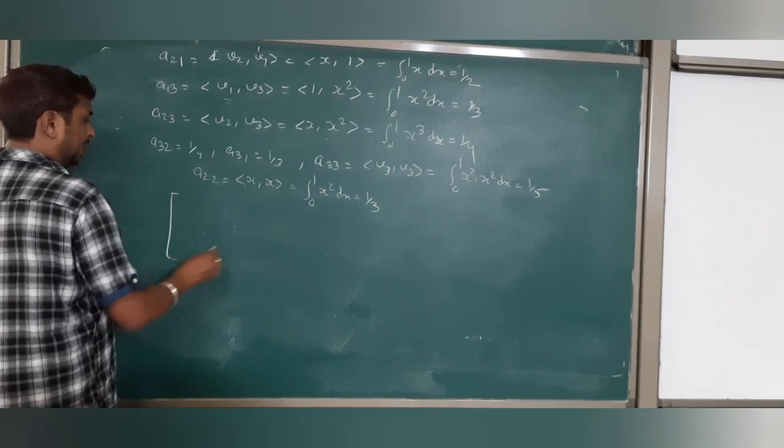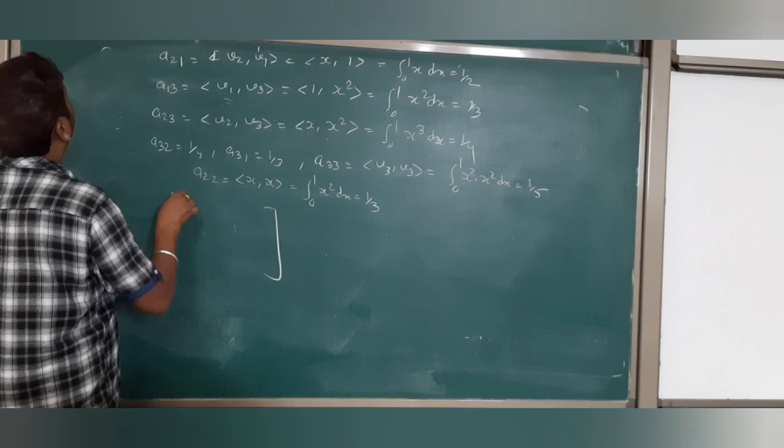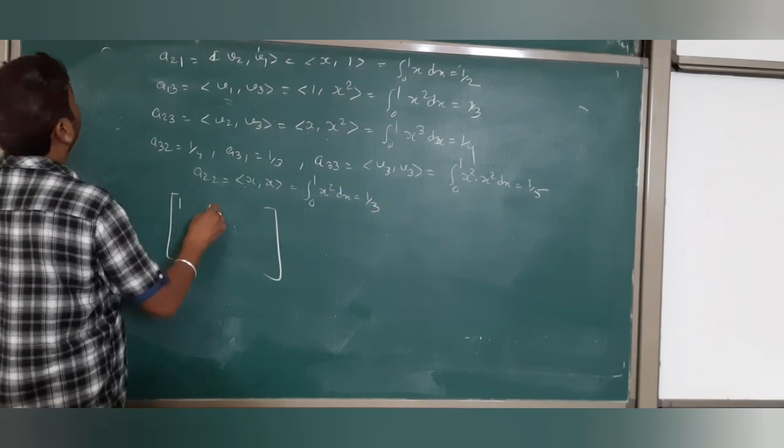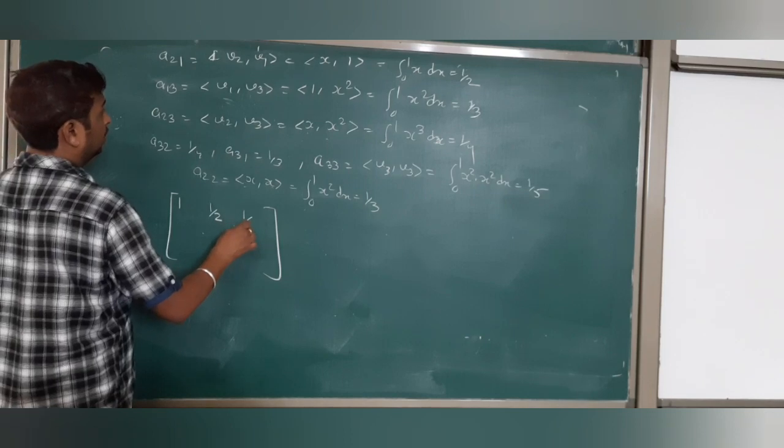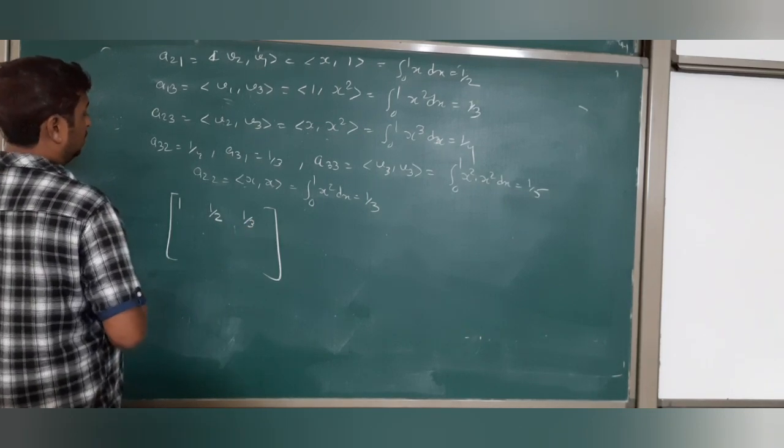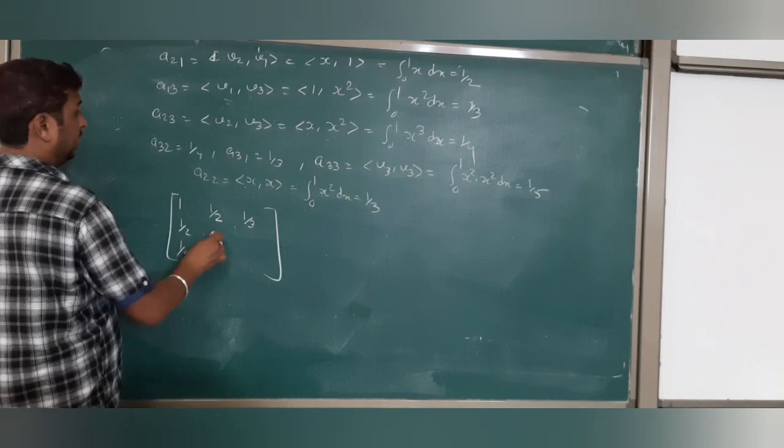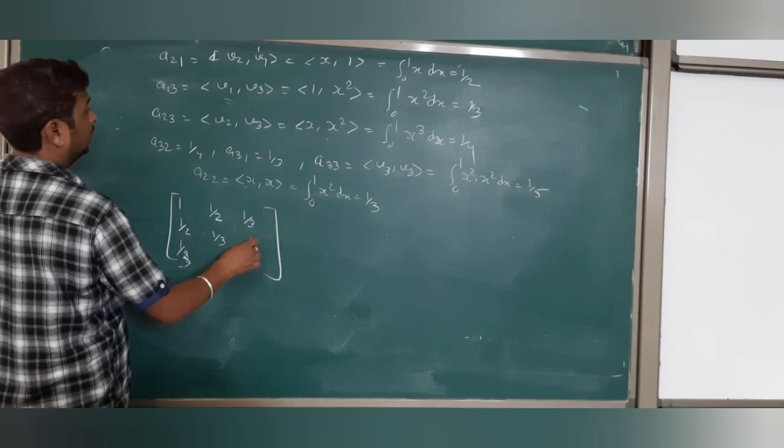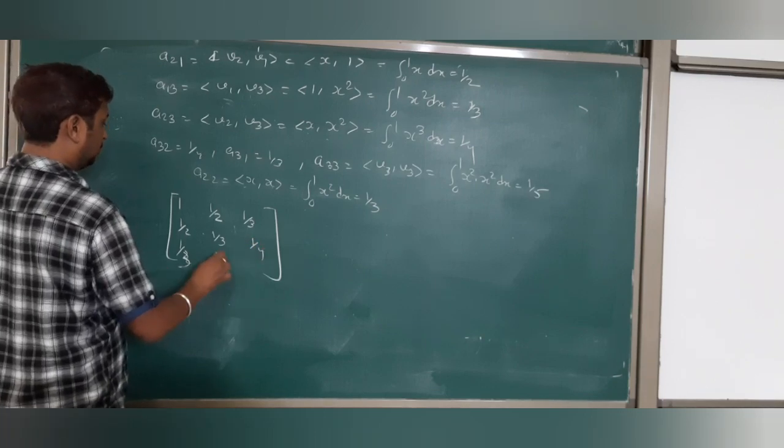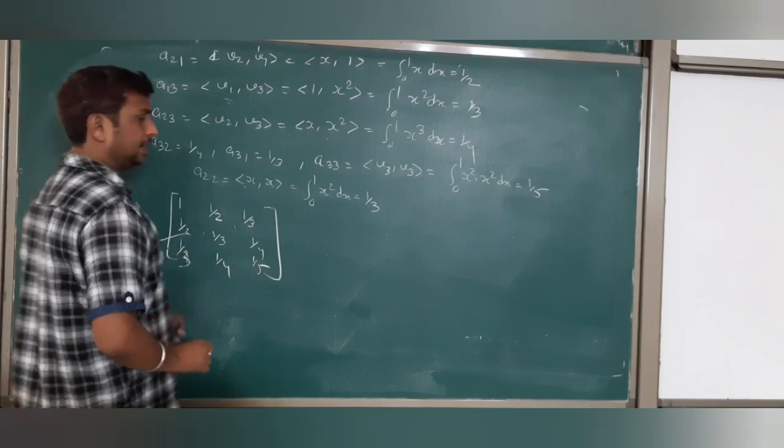Now the corresponding matrix is: a₁₁=1, a₁₂=1/2, a₁₃=1/3; second row: 1/2, 1/3, 1/4; third row: 1/3, 1/4, 1/5. This is the corresponding matrix.